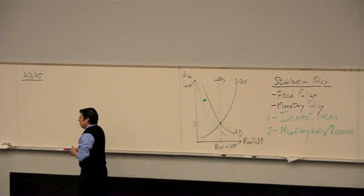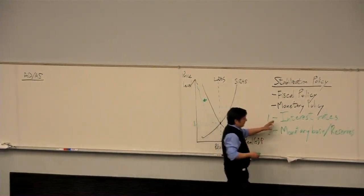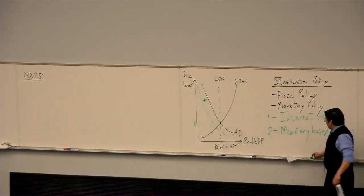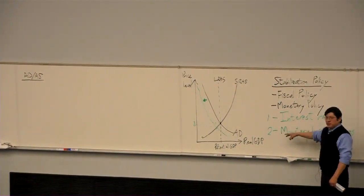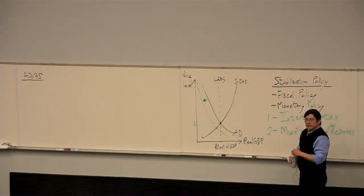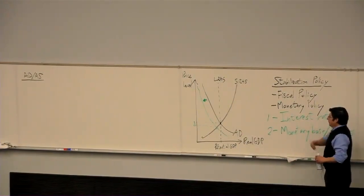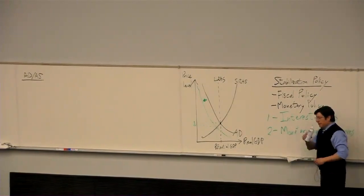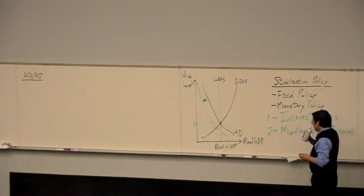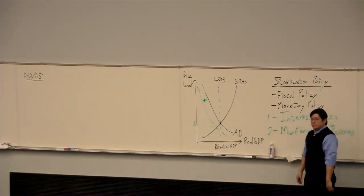There's an artificial distinction between the interest rate tool and the monetary base tool because it's impossible to change one without changing the other. Economists might still disagree on whether monetary policy is impactful because of its impact on interest rates or because of its impact on the amount of credit. Any questions or comments about this broad view of monetary policy?